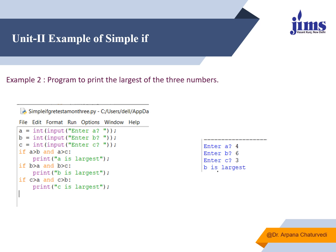This example prints the largest among three numbers. I accepted three numbers `a`, `b`, and `c`, converted them to integers, and compared using `and` — if `a > b` and `a > c`, it prints 'a is greatest'; if `b > a` and `b > c`, it prints 'b is greatest'; if `c > a` and `c > b`, it prints 'c is greatest'. There is no `else` part. When I entered three numbers, it returned 'b is largest'.